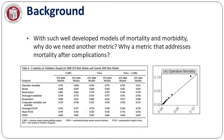Failure to rescue can be defined as mortality following a complication. So the question might well be asked: the Society has developed such well-established models for mortality and for complications, which have excellent discrimination, calibration, and reliability. With such well-developed models, why do we need another metric — one that addresses mortality and complications as a combined metric?